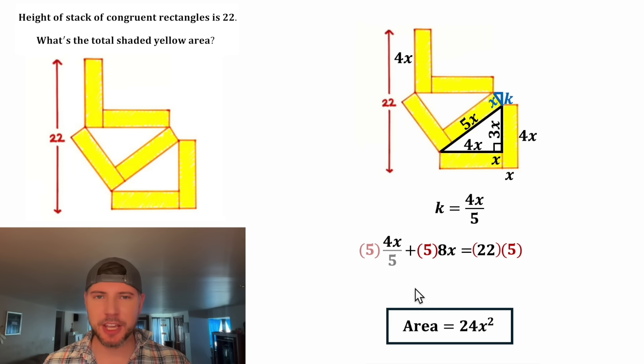For the first term, the 5 and the 5 will cancel each other out, leaving us with 4X. For this term, 5 times 8 is 40. And then 4X plus 40X is 44X. And then on the right-hand side, 22 times 5 is 110.